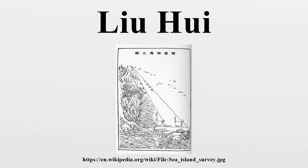He later invented a quick method, which he checked with a 3072-gon. The Nine Chapters had used the value 3 for pi, but Zhang Heng had previously estimated pi to be the square root of 10.